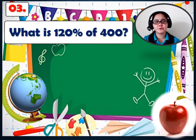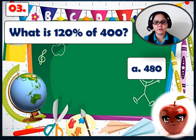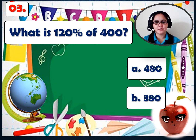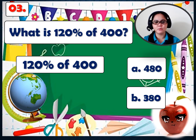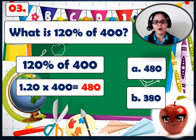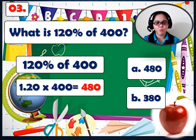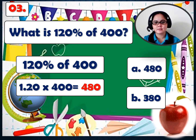Number 3: What is 120% of $400? A: 480, or B: 380. Let's solve. 120% of $400. We will be using decimal form: 1.20 times $400 equals $480. So the correct answer is letter A — it's $480.